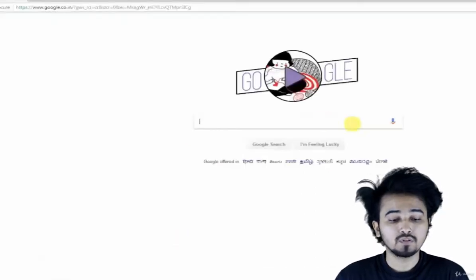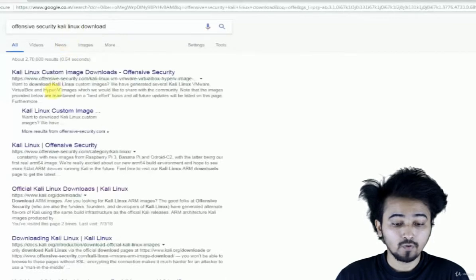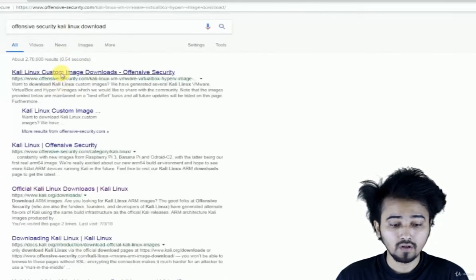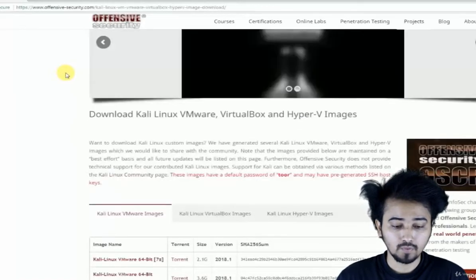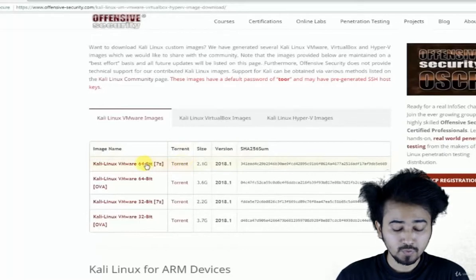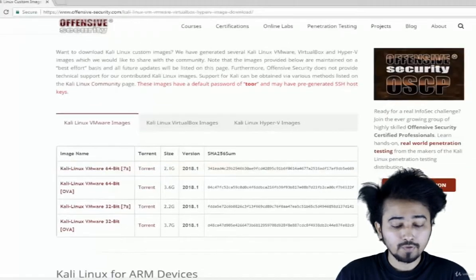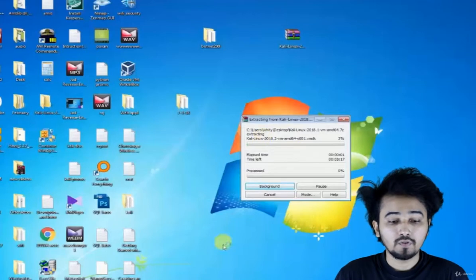First open up your browser and search for Kali Linux VMware. Go to the Kali Linux official website and you'll get the download links. Download whichever suits you. My computer is 64-bit so I will go for the 64-bit link. After downloading, extract it and keep it as is. We'll come back to it later.